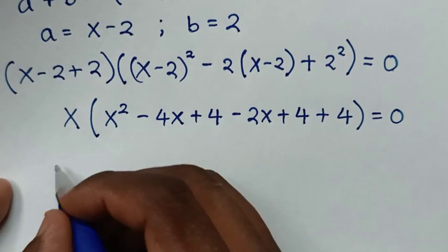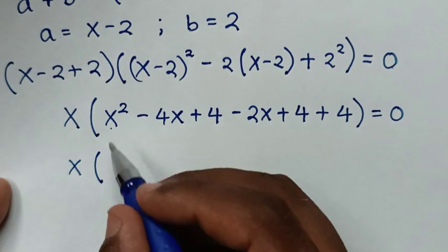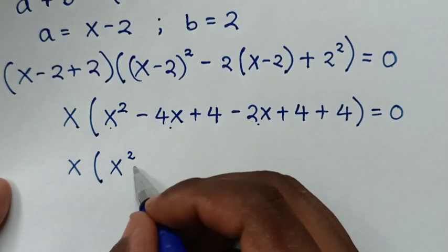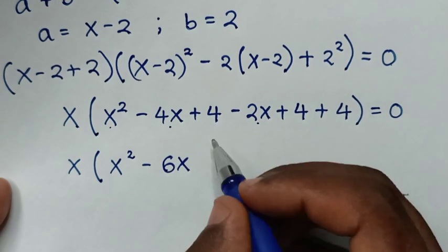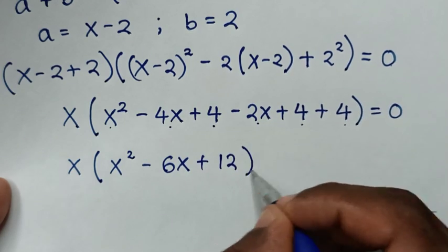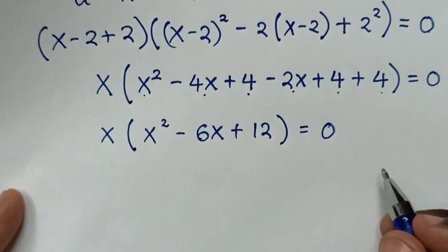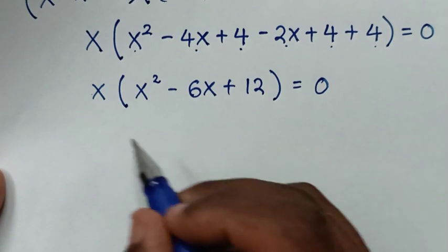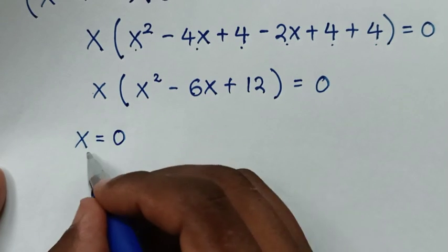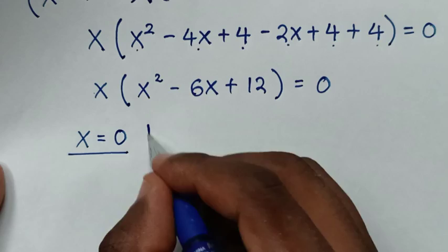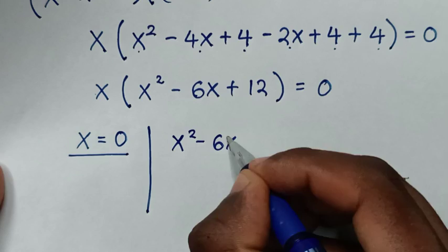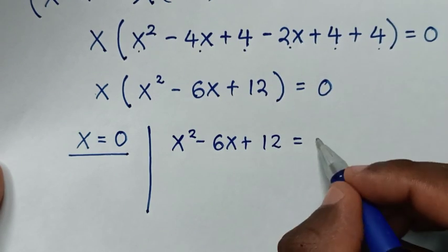In the next step it will be x(x² - 4x - 2x + 4 + 4) — collecting terms: -4x - 2x = -6x, and 4 + 4 + 4 = 12, giving x(x² - 6x + 12) = 0. From here we have two solutions: the first is x = 0, and the other is the quadratic equation x² - 6x + 12 = 0.